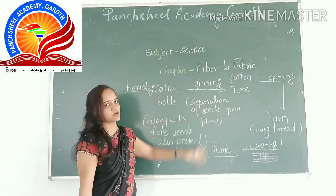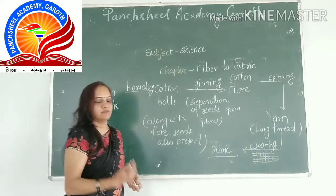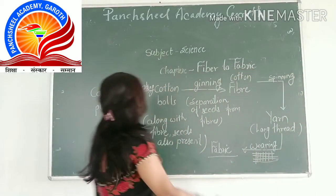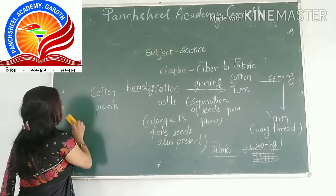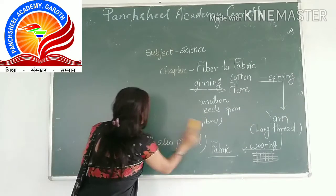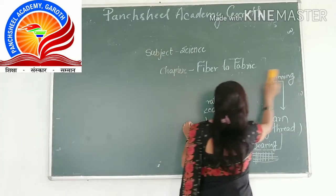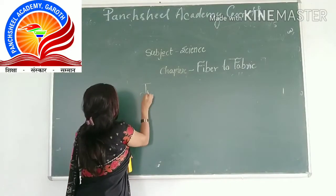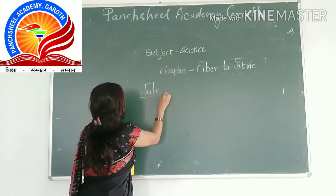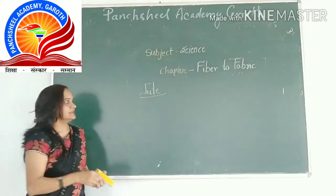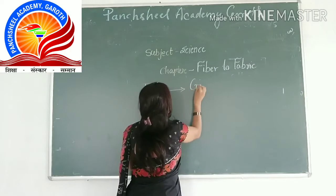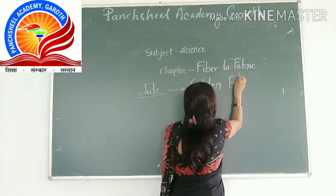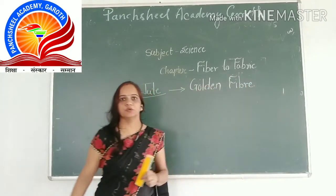This is the history of cotton fabric. Now we will start — how is jute obtained? What is jute? Jute is also known as golden fiber.